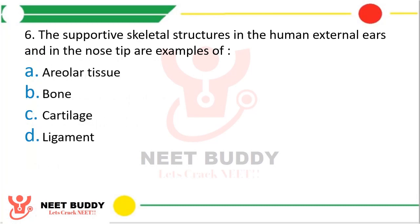Question number six: The supportive skeletal structure in the human external ears and in the nose tip — what are these examples of? Option A, areolar tissue; option B, bone; option C, cartilage; option D, ligament. The correct answer is option C, that is cartilage.